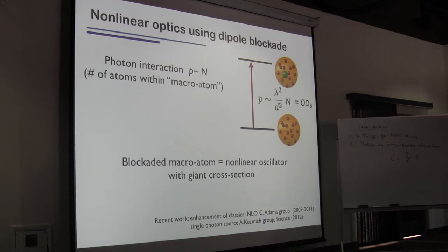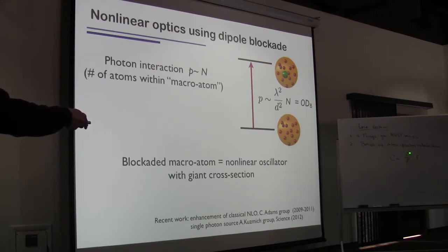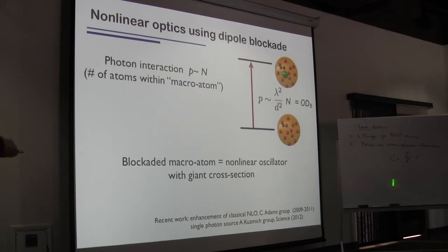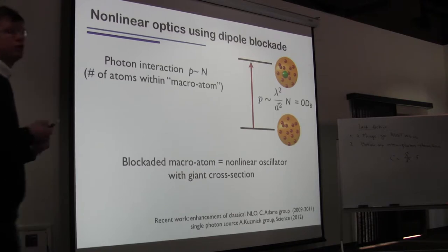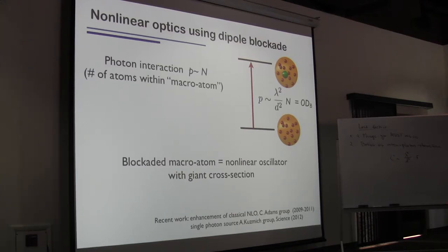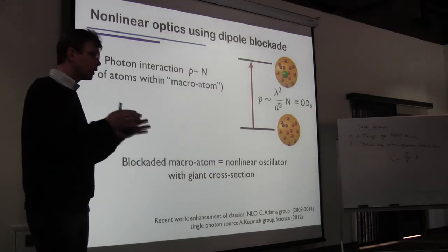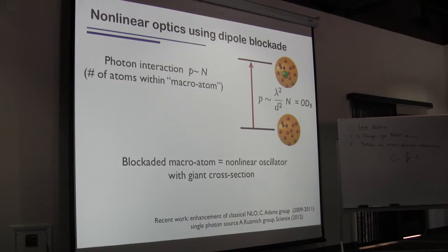This situation is special because even though the probability of interaction is enhanced, this macro-atom is extremely nonlinear. It can absorb one photon but not two — there are no other states accessible due to the blockade. So the blockaded macro-atom acts as an extremely nonlinear oscillator, a two-level system with a gigantic enhanced absorption cross-section. That's really the key feature this direction of the field is based upon. Instead of lambda-squared, the cross-section is enhanced by the number of blockaded atoms, allowing a very large effective cooperativity C, entering the domain of strong photon-photon interactions without requiring any cavity.